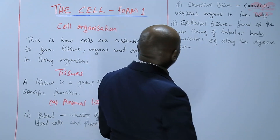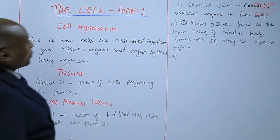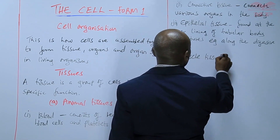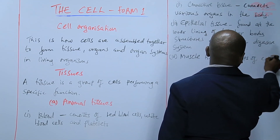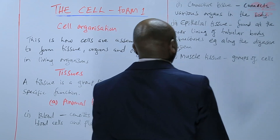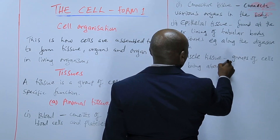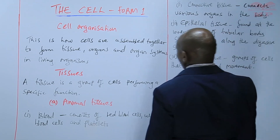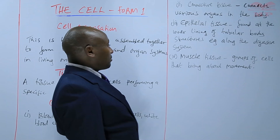Another example of animal tissue is muscle tissue, made up of groups of cells that bring about movement. So basically, those four are examples of animal tissues: blood, connective tissue, epithelial tissue, and muscle tissue.